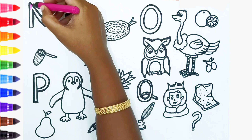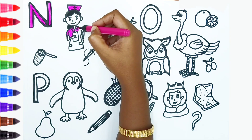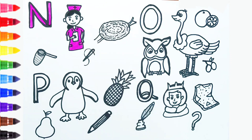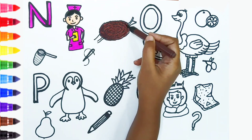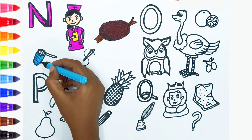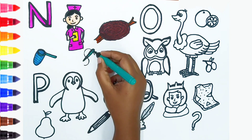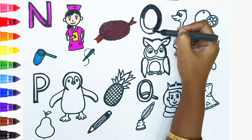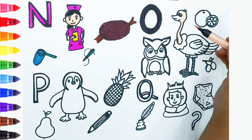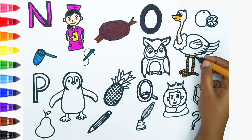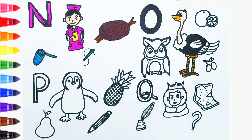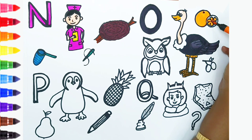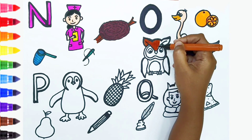N. N is for nurse. N is for nest. N is for net. N is for needle. O. O is for ostrich. O is for orange. O is for owl.